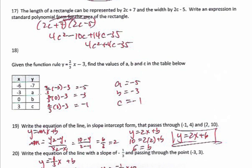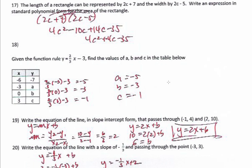For number 18, fill in the table using y equals two-thirds x minus 3. You can use the calculator — either use alpha Y= to produce the fraction two-thirds, or compute two times x divided by 3, then subtract 3. For x equals negative 3, y is negative 5. For x equals 0, y is negative 3. For x equals 3, y is negative 1. So a is negative 5, b is negative 3, c is negative 1.